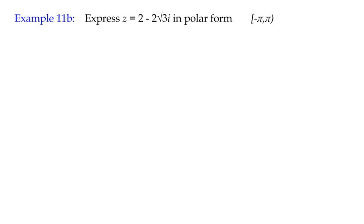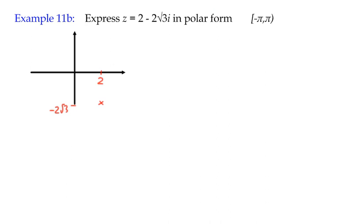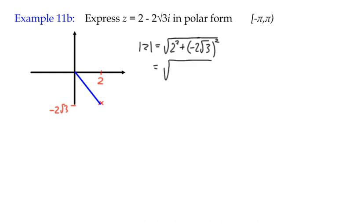For the second example, let's quickly look at the complex number 2 minus 2 root 3 i. With real part positive 2 and imaginary part negative 2 root 3, the complex number is in the fourth quadrant. The modulus is the square root of 2 squared plus (negative 2 root 3) squared — that's 4 plus 12, which is 16. So the modulus is 4.